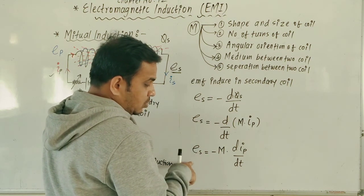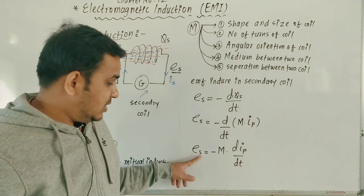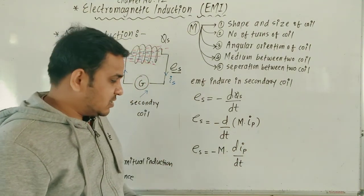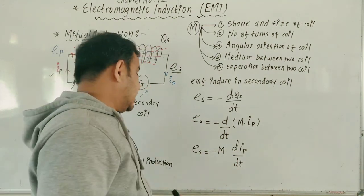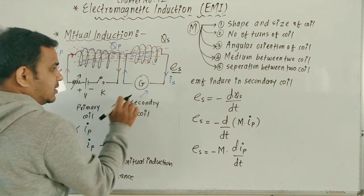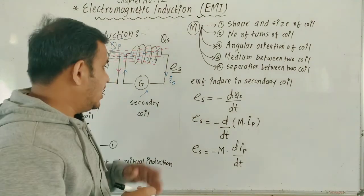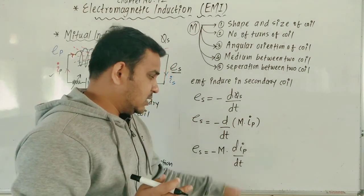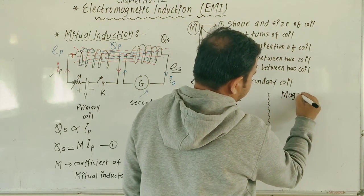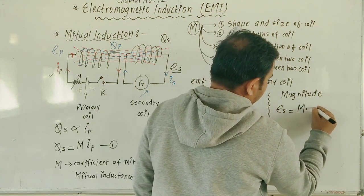The negative sign indicates that the EMF induced in the secondary is such that it opposes the change of current in the primary — as current increases, the lines increase in one direction, and to oppose that, lines decrease in the other direction. So in magnitude, we can write: |E_S| = M × dI_P/dt.